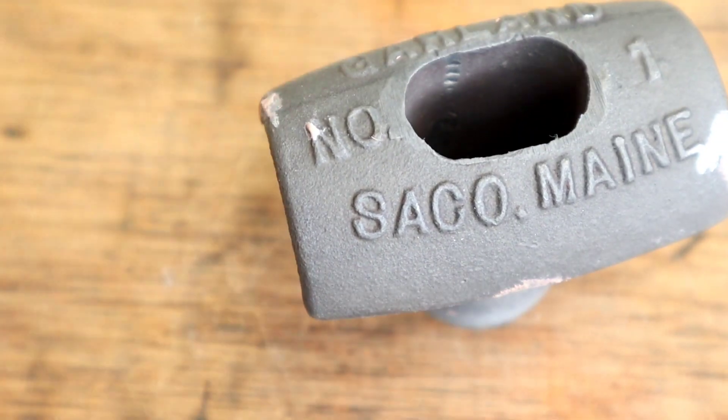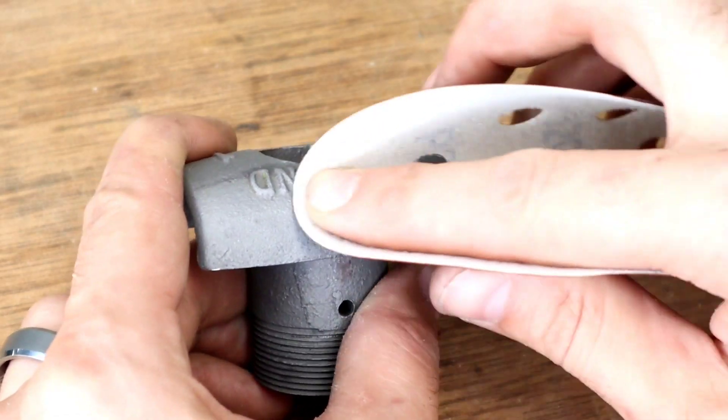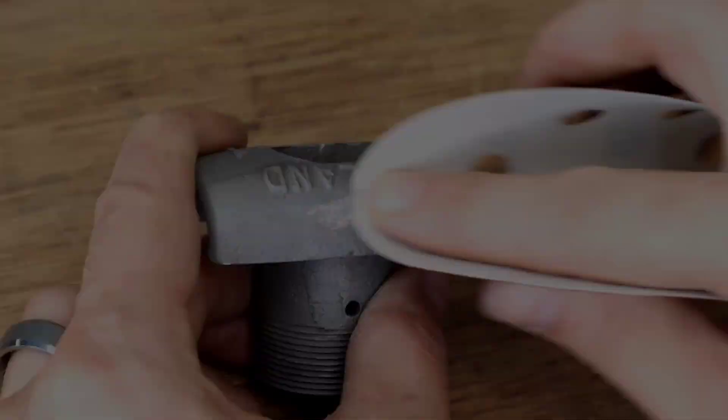After allowing the filler to dry, use a 320 or 400 grit sandpaper to remove anything on the surface.